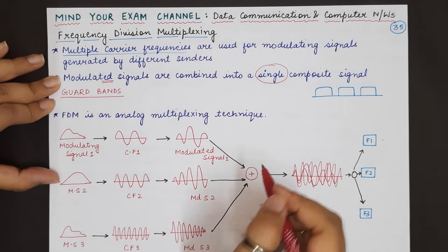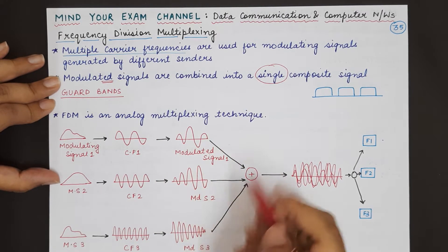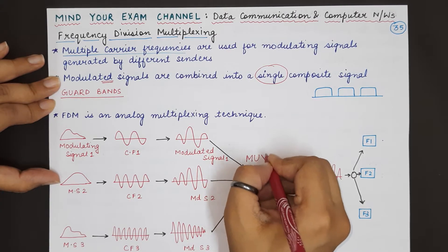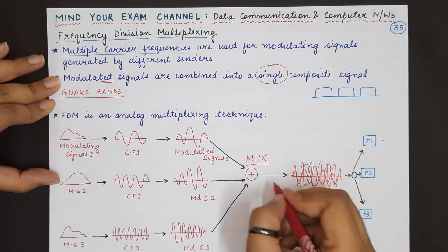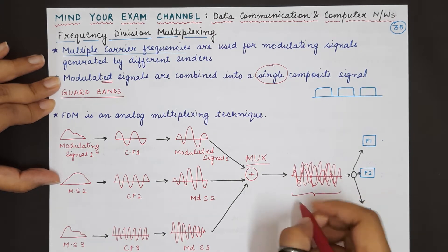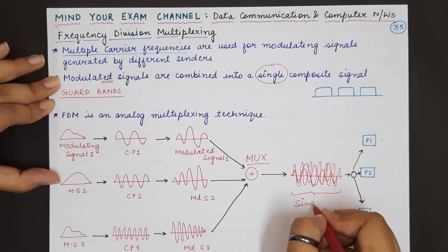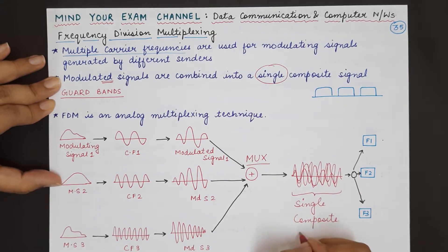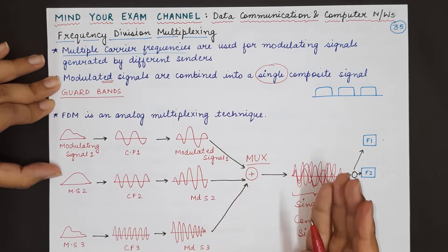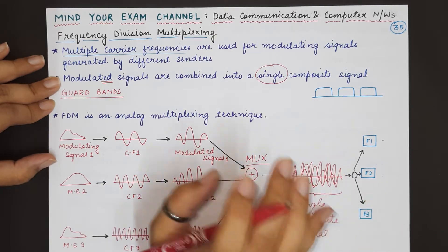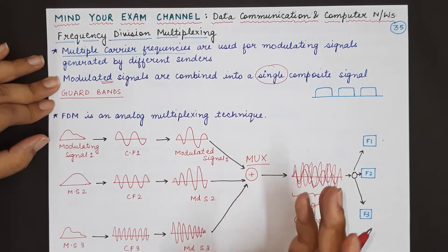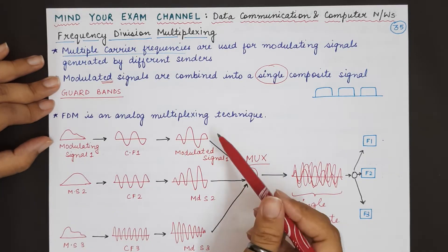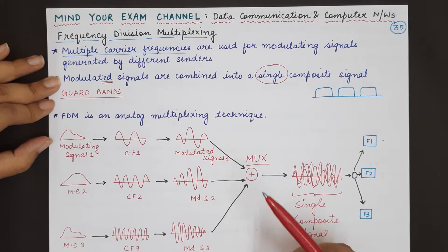All three modulated signals are combined using a multiplexer and they are sent as a single composite signal using the link. This is the link that originally had a higher bandwidth which was being underutilized. Now since we are sending a composite signal, the bandwidth of this link will be better utilized.